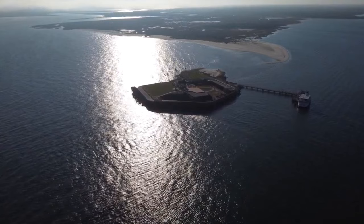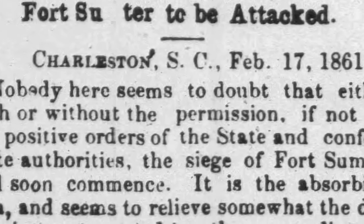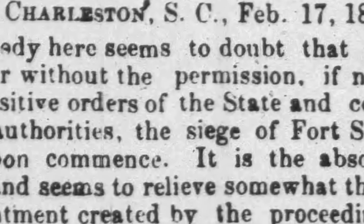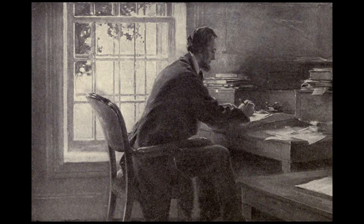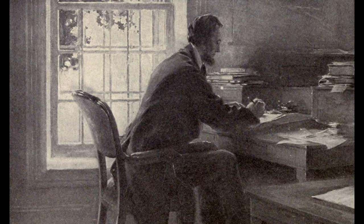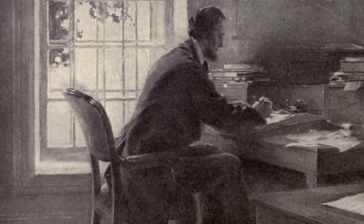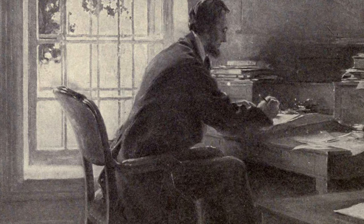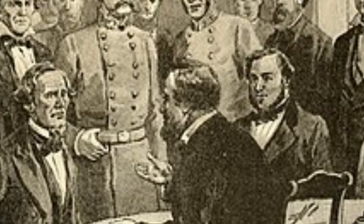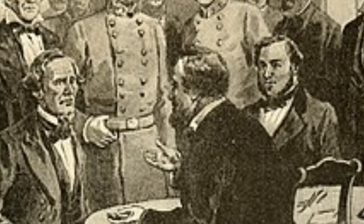Confederate forces would not allow any Union ships to supply or reinforce Fort Sumter, effectively beginning a siege. Once President Lincoln took office, he informed the governor that he was sending supplies to Fort Sumter. The Confederate government had to make a decision.